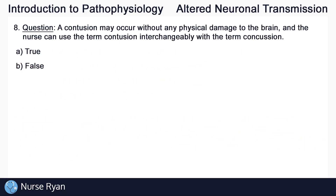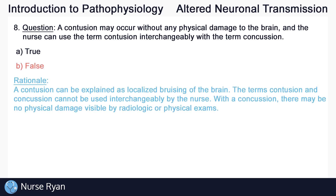For the last question, number eight: a contusion may occur without any physical damage to the brain, and the nurse can use the term contusion interchangeably with the term concussion. The answer here is B, false. A contusion can be explained as a localized bruising of the brain, which is physical damage. The terms contusion and concussion cannot be used interchangeably by the nurse. With a concussion, there may be no physical damage visible by radiologic or physical exams.